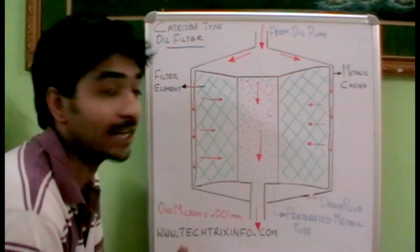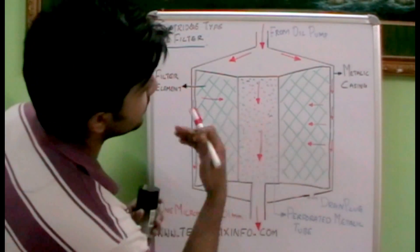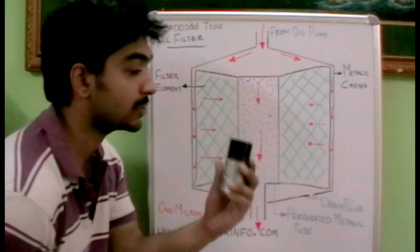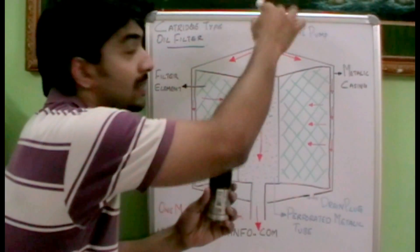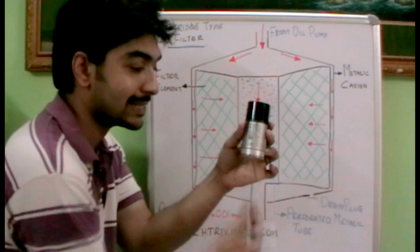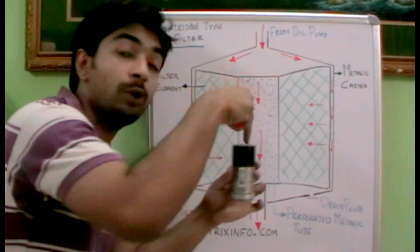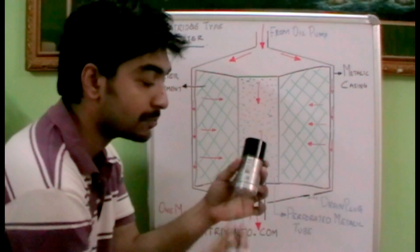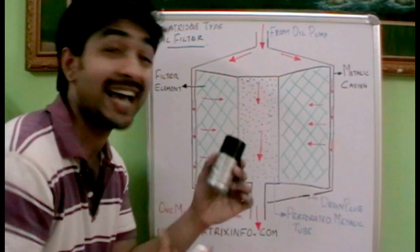So let's see how it actually works. Consider this as a cylindrical piece of filter. The oil will be coming through here, it enters through here and it escapes through here. When it enters through here it will be impure in stage, and when it escapes to here it becomes pure. So let's see how it becomes pure.